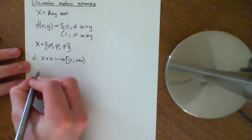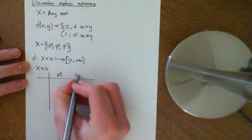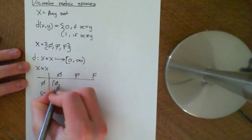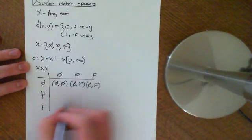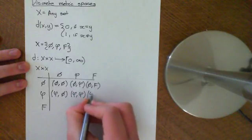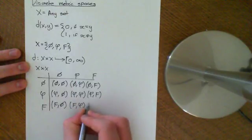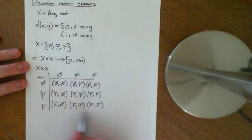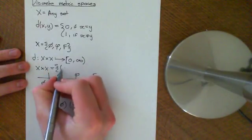If I construct the Cartesian product of this set, I draw a table like this — I have capital Phi, lowercase phi, and f along both axes. I can construct the Cartesian product: (Phi, Phi), (Phi, phi), (Phi, f), and so on. The Cartesian product X×X is another set containing all of these ordered pairs.